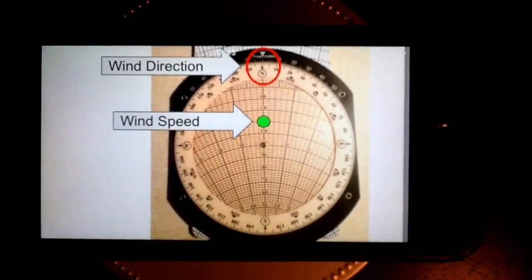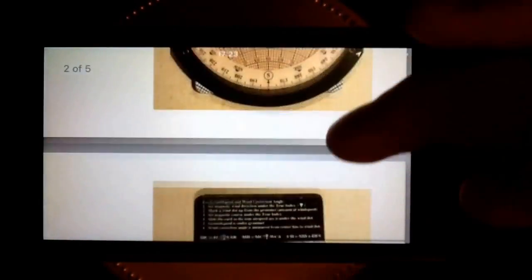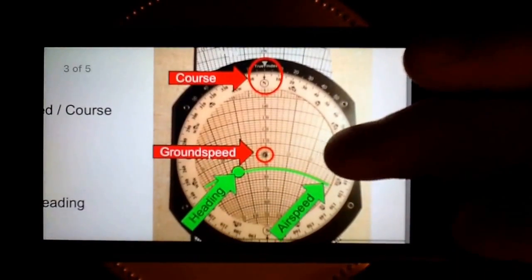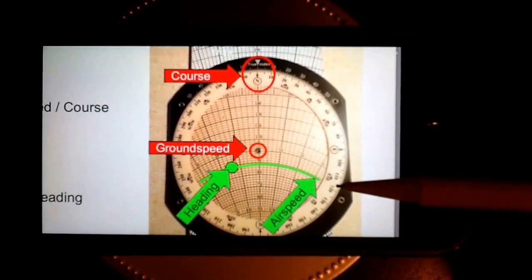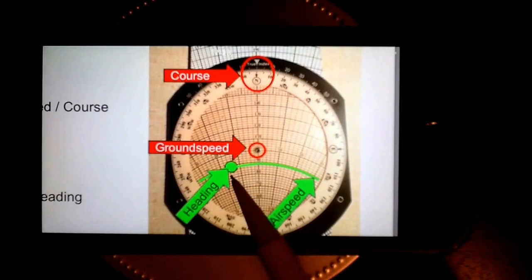Then we're going to rotate the card around and put it into aircraft mode, at which point we're going to set course and airspeed, and we'll be able to read the ground speed and the heading.